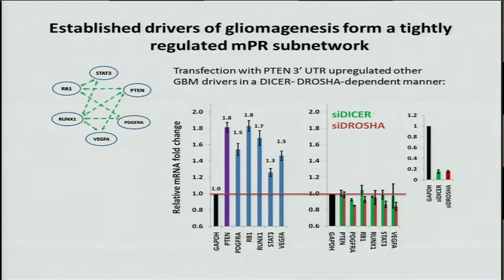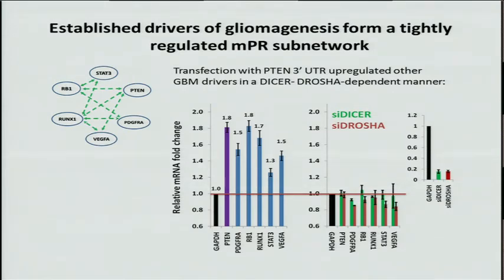Inside this network, we identified a small, very dense subnetwork that includes six well-known glioblastoma drivers. To see what response the expression of each of these genes has to changes in 3' UTRs, we transfected the cell with PTEN 3' UTR and saw an upregulation of roughly about 50% in every one of these genes. This is not very strong upregulation, but it is consistent and significant. Silencing DICER and DROSHA, which are canonical non-sequence-specific biogenesis regulators of microRNAs, completely abrogated this response.